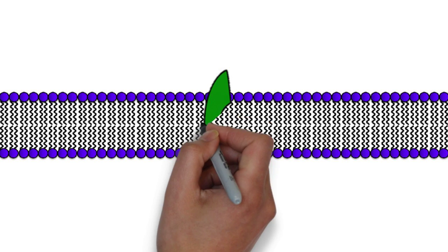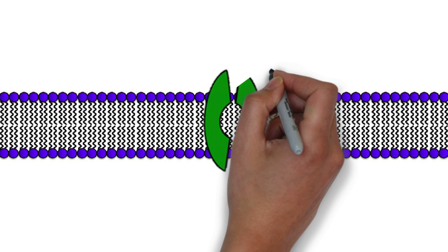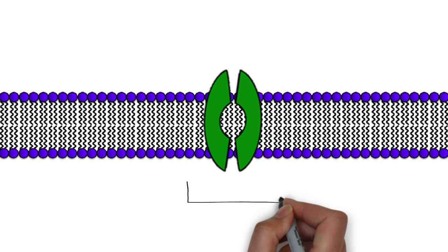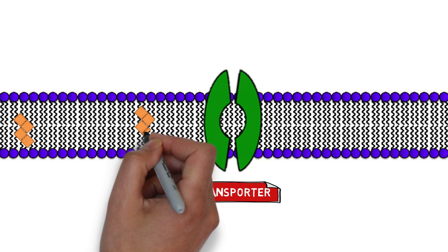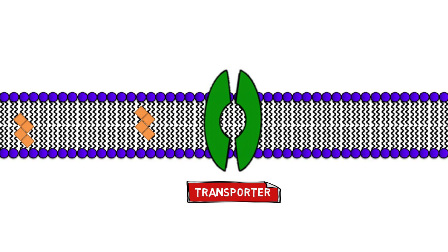Transporters form an important class of membrane molecules, instrumental in helping other molecules move across the cell membrane, into or out of the cell. Within the cell membrane, there are also other classes of membrane molecules which play important roles in helping the cell function properly.